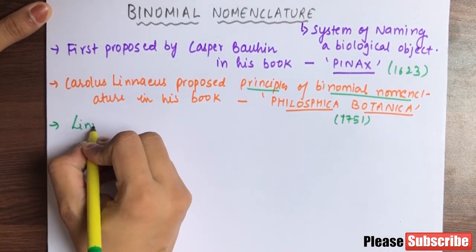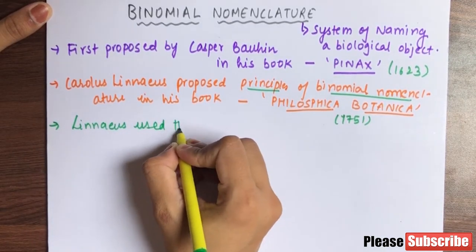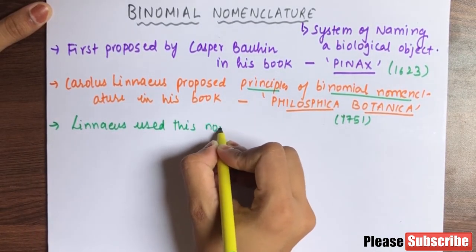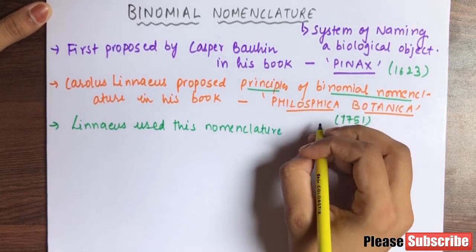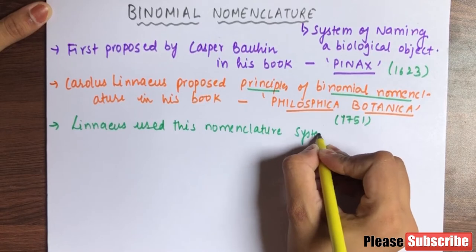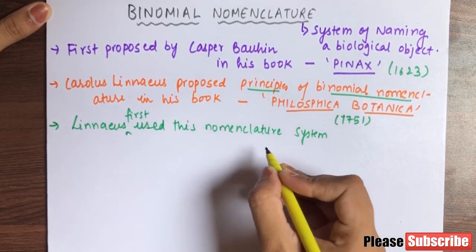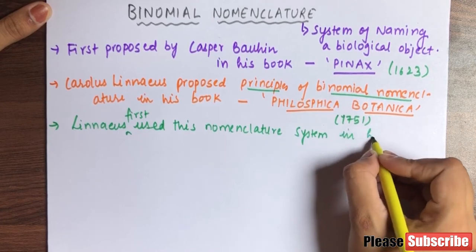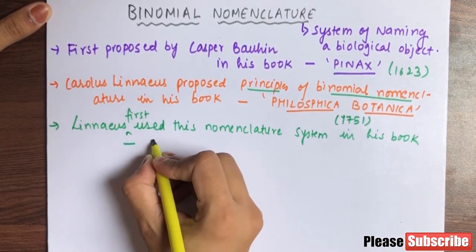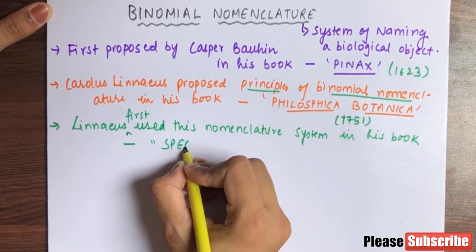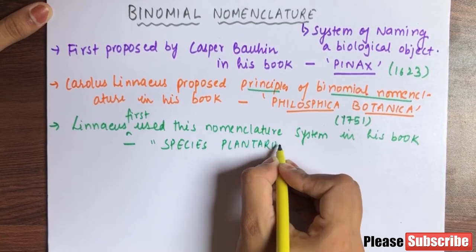Linnaeus was the first to use this nomenclature system. He used it in his book Species Plantarum, which is a book about plants.